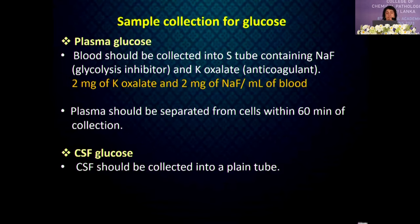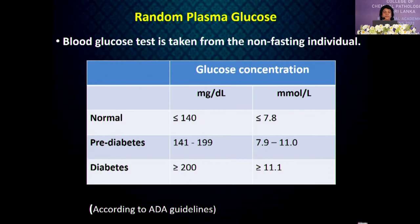For sample collection: plasma glucose should be collected in a fluoride tube containing sodium fluoride and potassium oxalate. Sodium fluoride inhibits glycolysis and potassium oxalate acts as an anticoagulant. Plasma should be separated from cells within 60 minutes of collection. For CSF glucose, CSF should be collected in a plain tube.